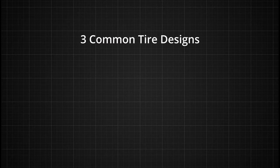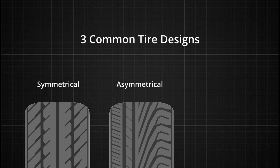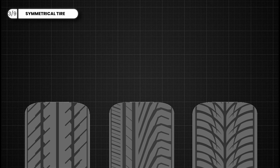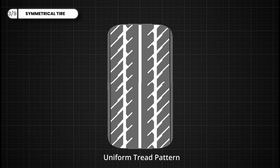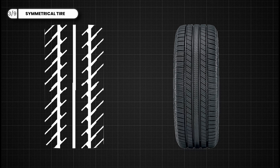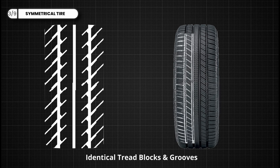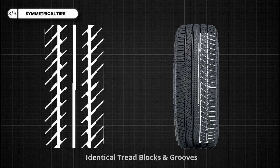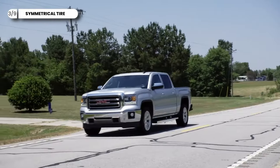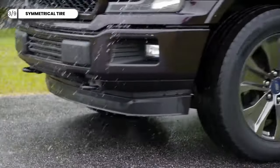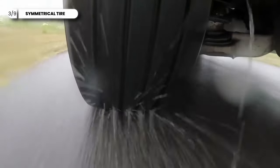There are three common tire tread designs: symmetrical, asymmetrical, and directional. Symmetrical tires feature a uniform tread pattern across the entire surface, with identical tread blocks and grooves on both sides of the tire. This design offers consistent performance and predictable handling in various driving conditions; however, it is not commonly used in high-performance tire designs.